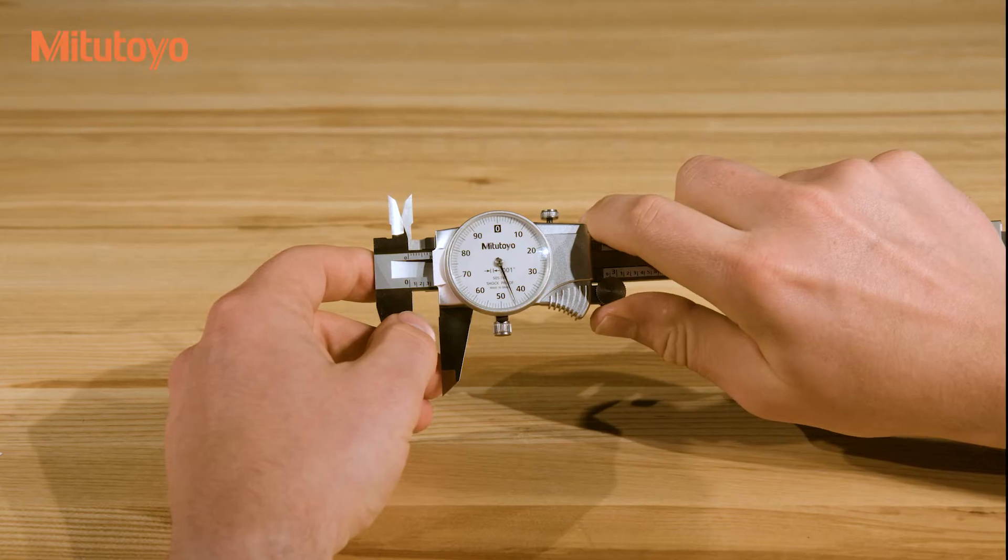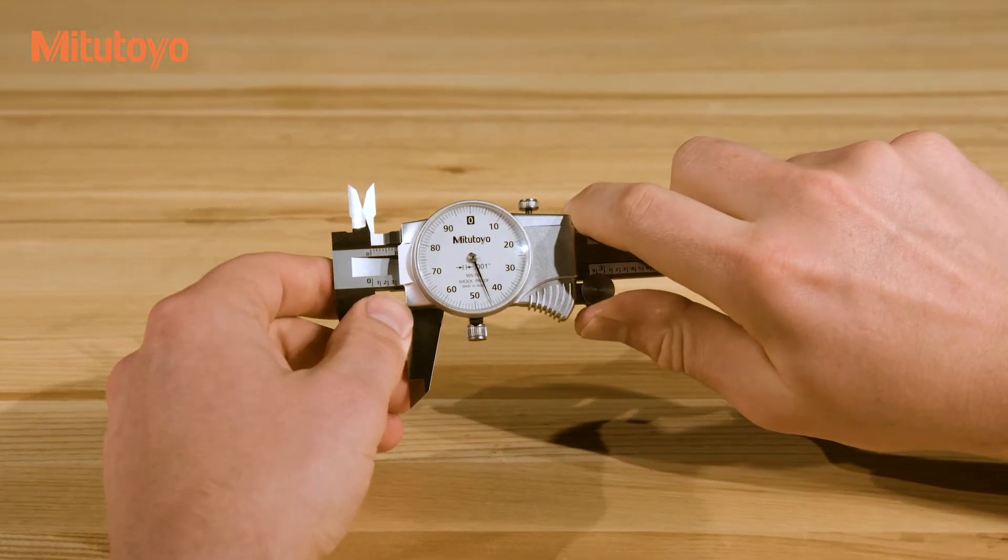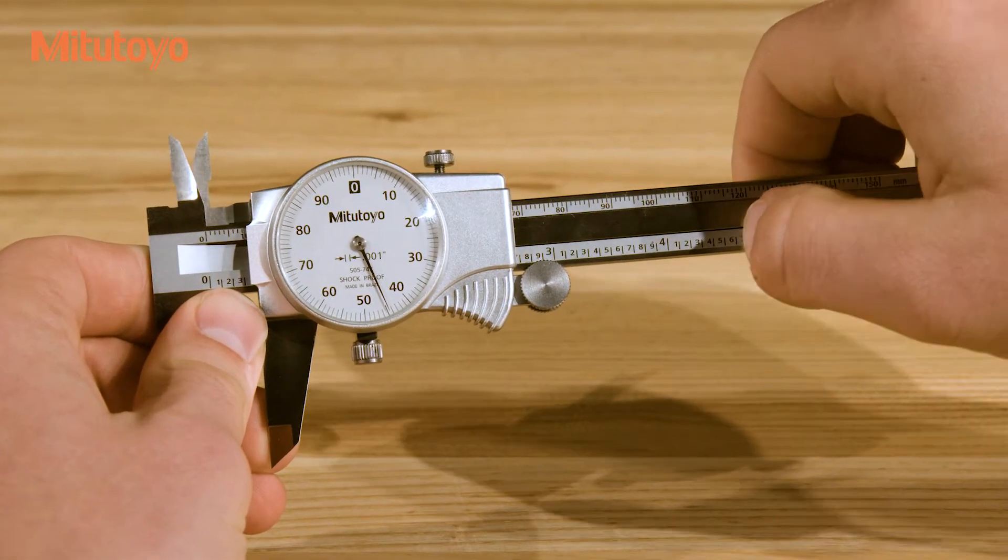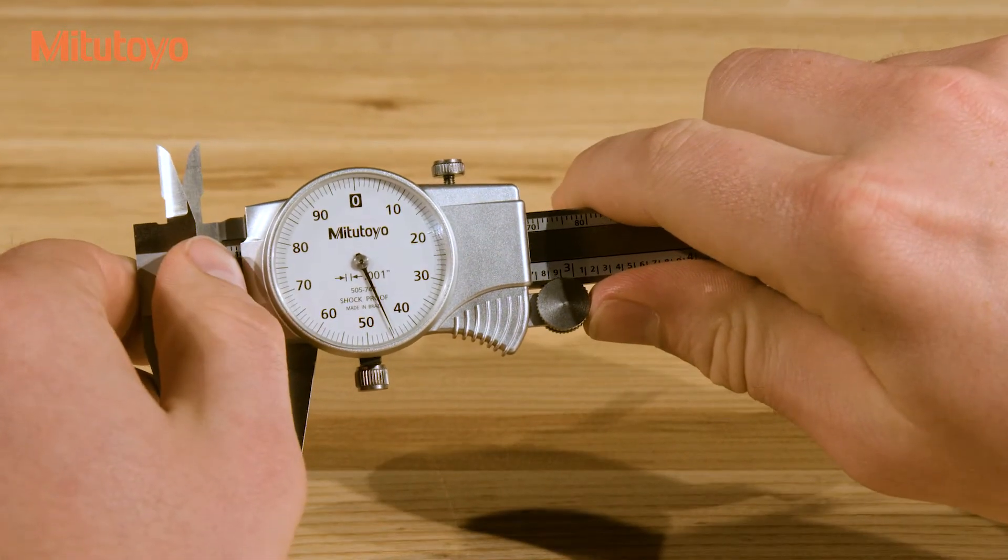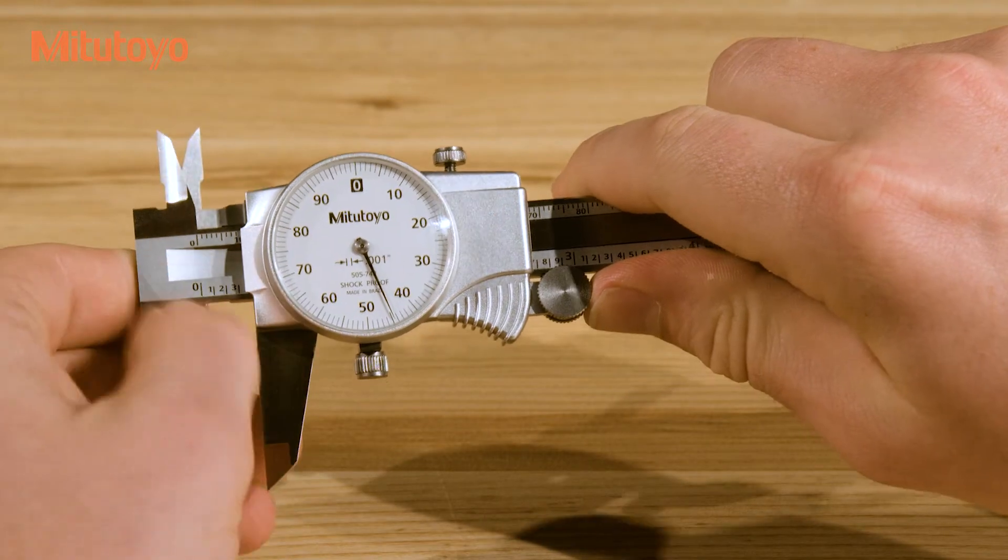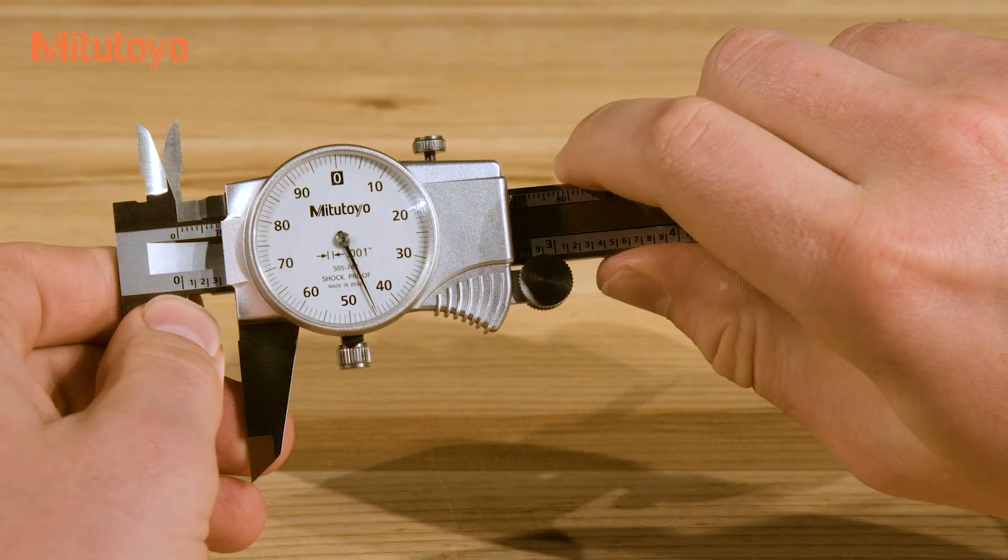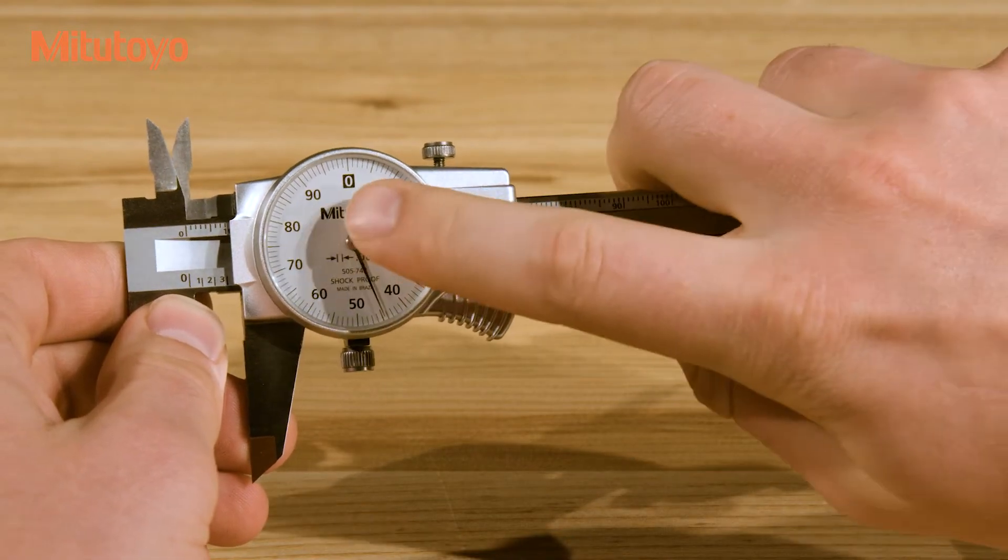There are two sets of graduations on a dial caliper. On an inch caliper like this one, the main scale is marked in .1 inch intervals and is read directly by finding the last line passed by the end of the sliding jaw. The dial is marked in .001 inch intervals and is read by identifying the graduation indicated by the hand.